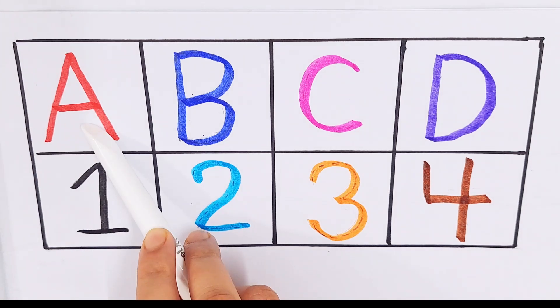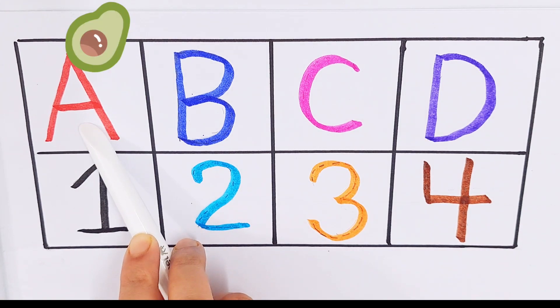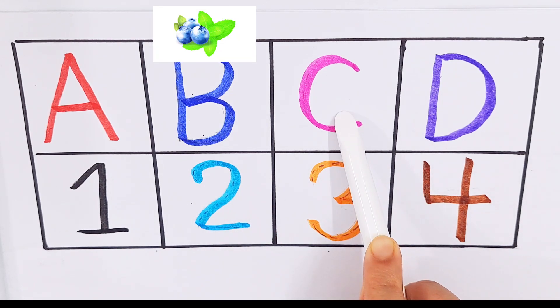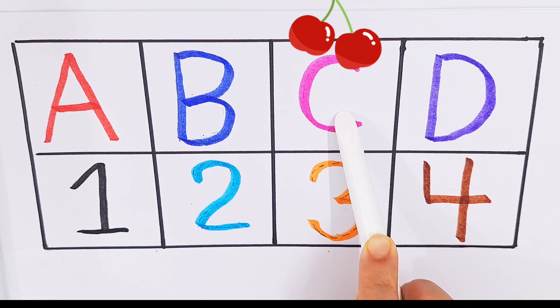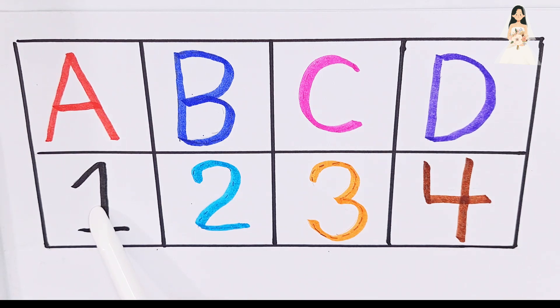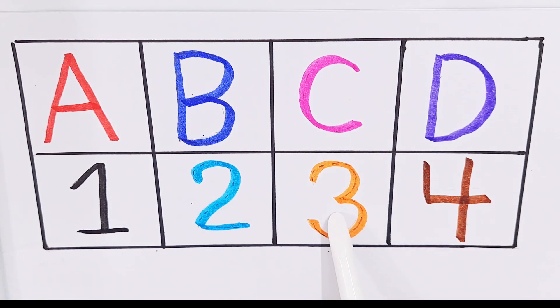A, A for avocado. B, B for blueberry. C, C for cherry. D, D for doll. Number one, number two, number three, number four.